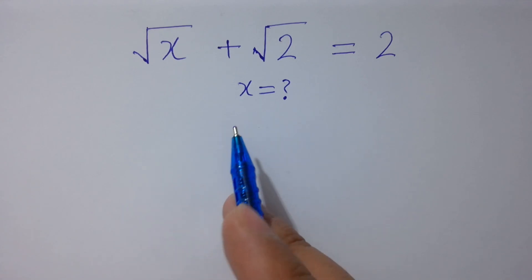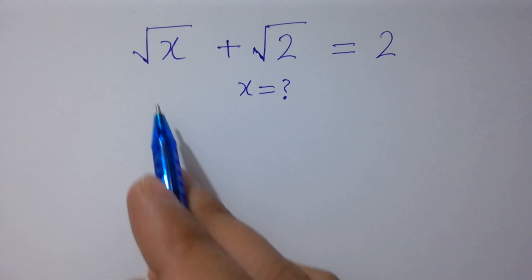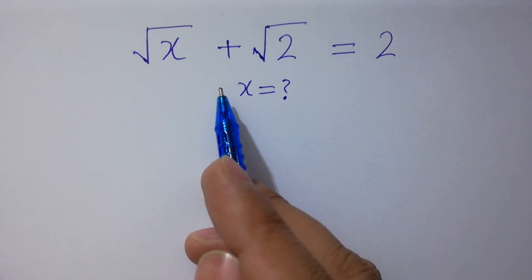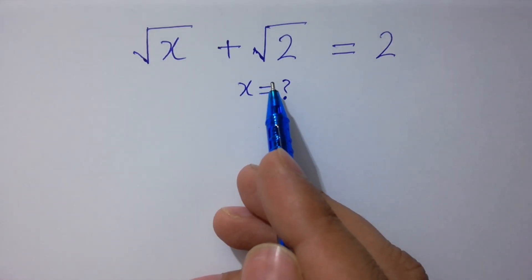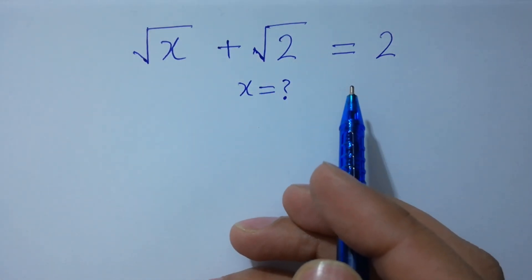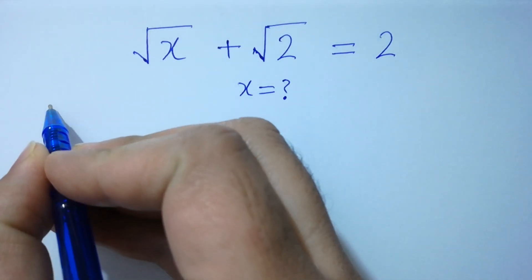Hello friends. Find the value of x if square root of x plus square root of 2 equals 2. Let's have a solution.